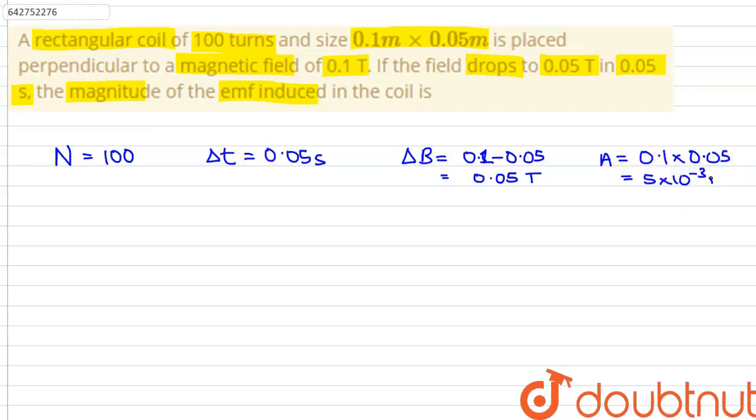The formula to calculate the change in magnetic flux is given by delta phi is equals to A into delta B.